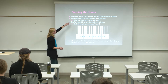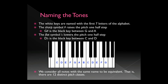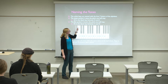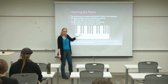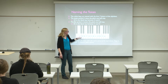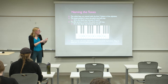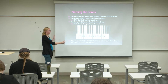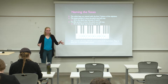Sharp raises a note a half step — so G sharp means take G and go one key to the right. Flat lowers it by a half step — D flat means go to D and one key to the left. Each key has a name. For this talk, we're considering all Cs to be the same note, ignoring octave differences. C is just C, period — same with all other notes.